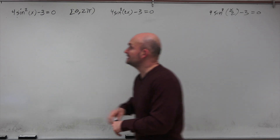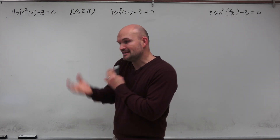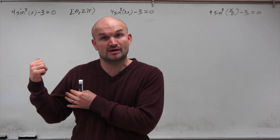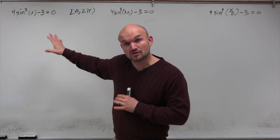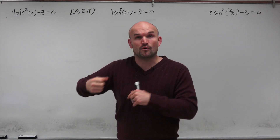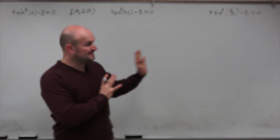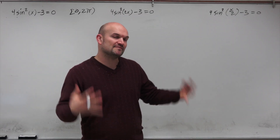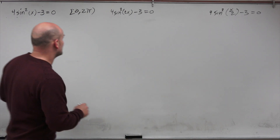The first problem is 4 sine squared of x minus 3. We need to find the angles that make that equation true. The first tip is to solve for your trigonometric function. Since we only have one trig function, we'll use inverse operations. If you have more, you'd want to look into factoring and other techniques.